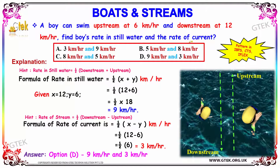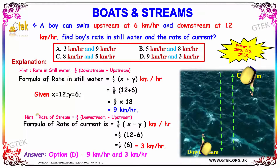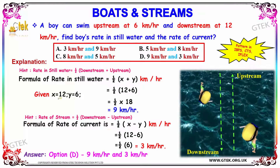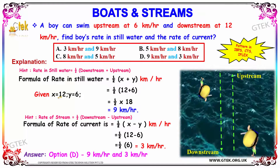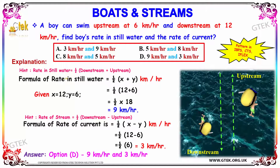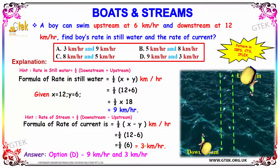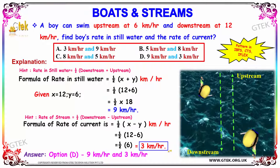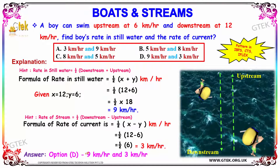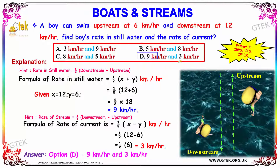Next, we have to find the rate of current, which is the rate of stream. The rate of stream is obtained by half into (downstream minus upstream). Our downstream is 12 and upstream is 6, so half into (12 minus 6) equals half into 6, which equals 3 kilometers per hour. Hence, our answer is option D: rate in still water is 9 km/h and rate of current is 3 km/h.